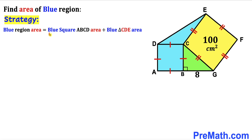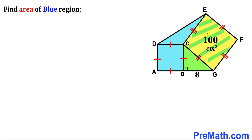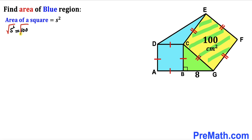Our task is to calculate the blue square ABCD area and the blue triangle CDE area. Let's focus on yellow square EFGC, whose area is given as 100 centimeter square. Recalling the area of a square formula — area equals s squared — we set s squared equal to 100. Taking the square root on both sides, our side length s is positive 10.